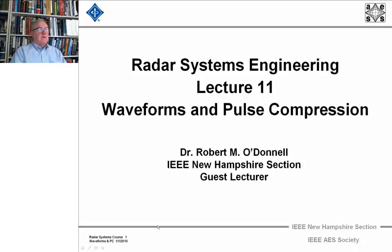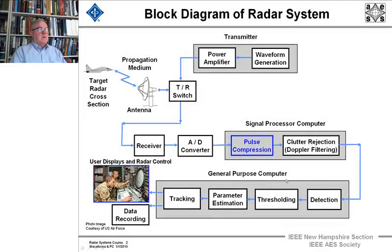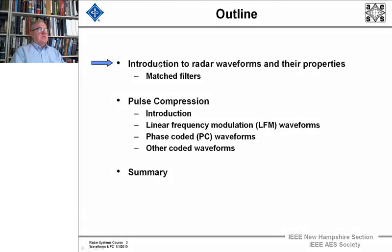Welcome to lecture 11 where we'll be discussing radar waveforms and pulse compression. Here's the block diagram of the radar — here is where we do the pulse compression process and here is where we generate the waveforms that we're going to transmit. We'll talk about what kinds of waveforms we transmit, how they're processed in the receiver, and introduce a technique called pulse compression. First we'll introduce radar waveforms and their properties, talk about matched filters, then cover the different types of pulse compression.